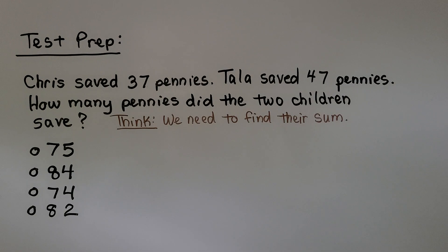Let's try some test preparation. Chris saved 37 pennies. Tala saved 47 pennies. How many pennies did the two children save? We think we need to find their sum.